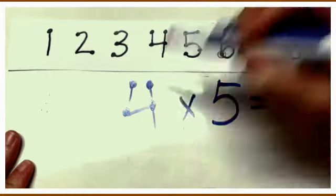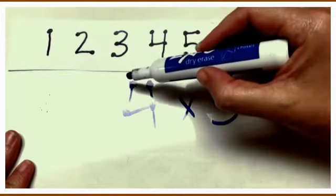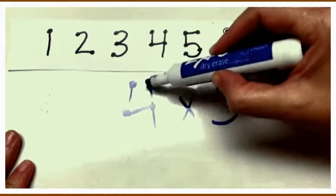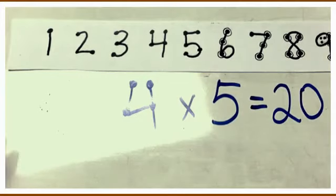Then I skip count by fives while touching those points: five, ten, fifteen, twenty. So four times five would be twenty. Other students who have difficulties, for example, with copying these touchpoints from their strip onto these numbers with accuracy, might find it easier to just go to the strip.